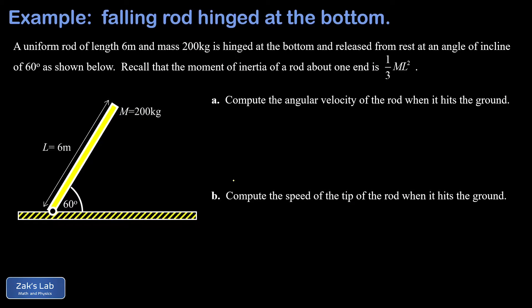In this video we're analyzing the motion of a falling rod. This rod is hinged at one end so that it can't slip and we release it from rest at an angle of 60 degrees above the horizontal. We're given the specs on the rod: it has a mass of 200 kilograms, a length of 6 meters. What we're trying to figure out is the angular velocity of the rod when it hits the ground, and then the follow-up question is to find the speed at the tip of the rod when it hits the ground.